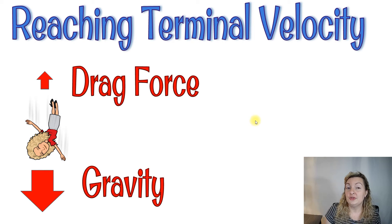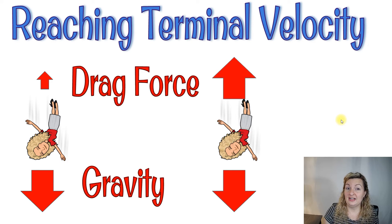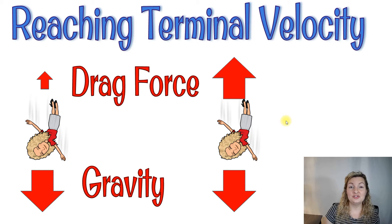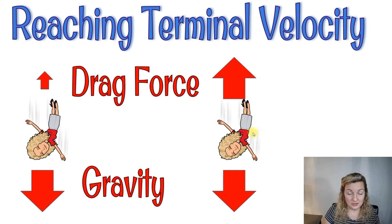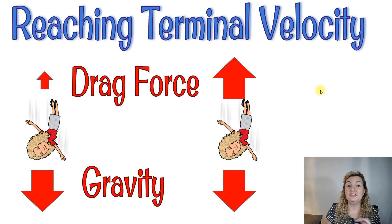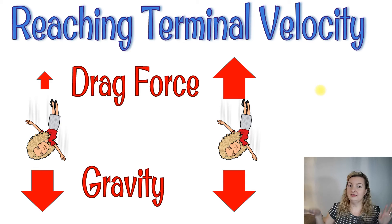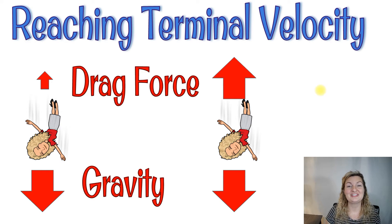Eventually, you will reach a spot called your terminal velocity, and this is where you cannot speed up anymore. This is where your forces are balanced. Your drag force is going to increase all the way up to equal your gravitational force pulling down on you. Once these are equal, you kind of feel weightless — like you're having a free-floating moment almost. And this is going to be your terminal velocity; this is when you cannot get any faster.